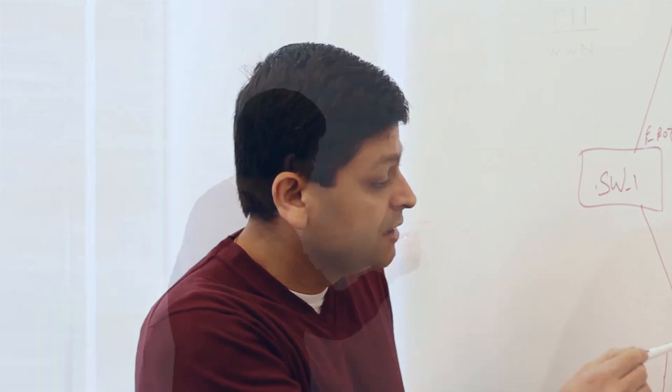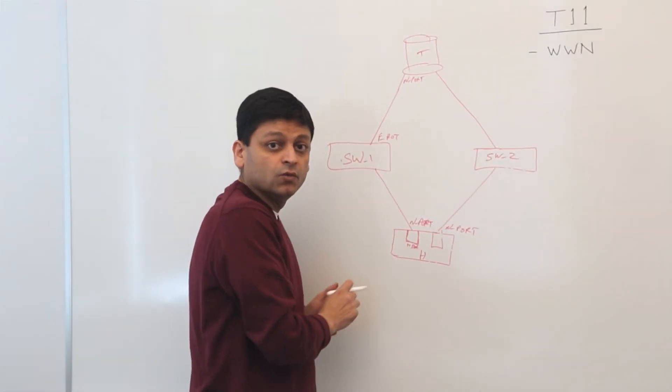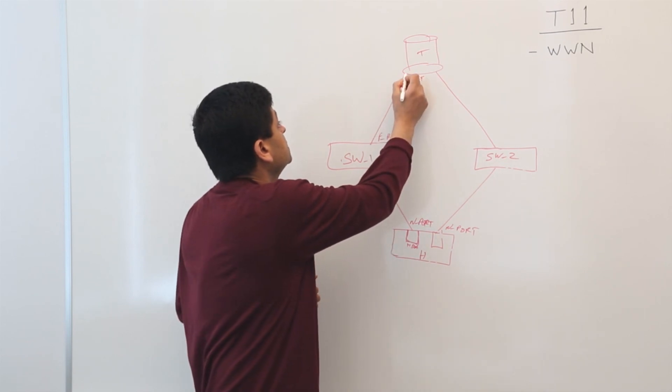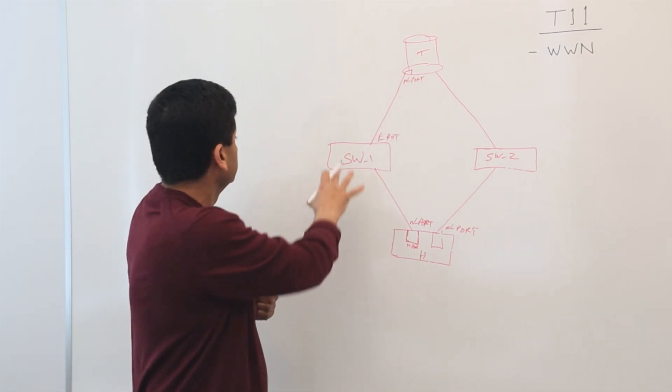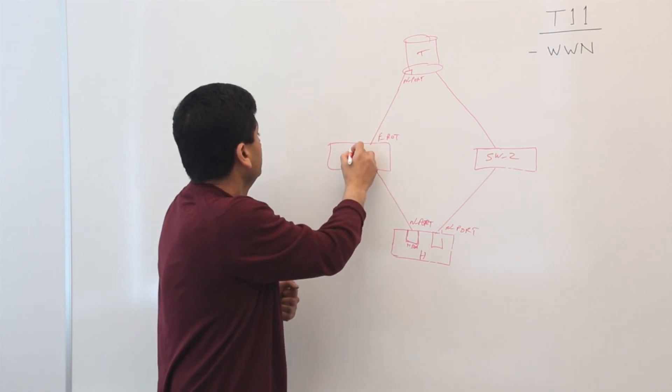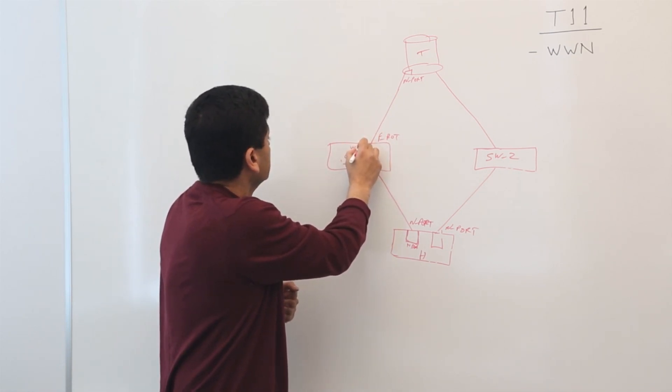So here, this HBA here will get a WWN. This HBA here will get a WWN. And this switch itself will also get a WWN.